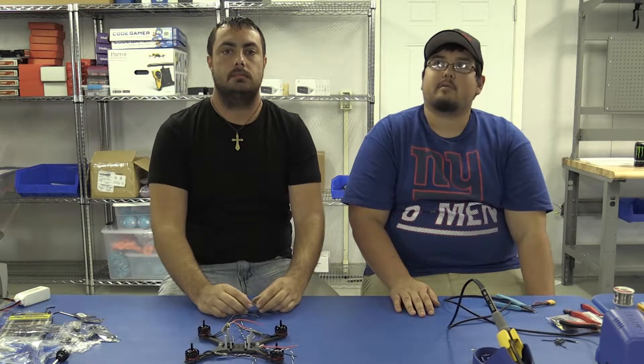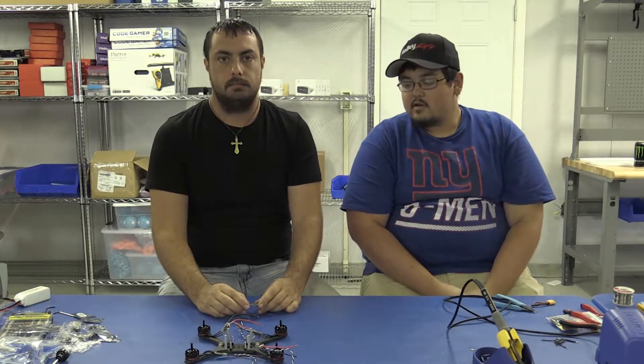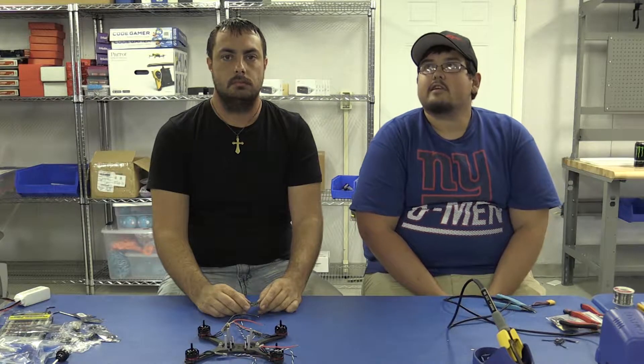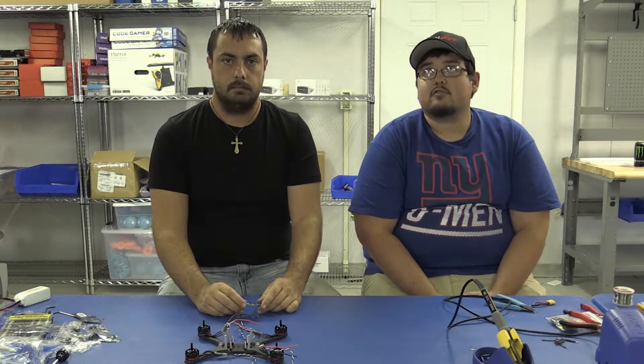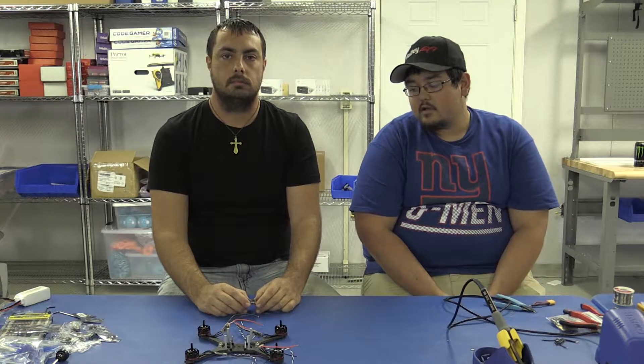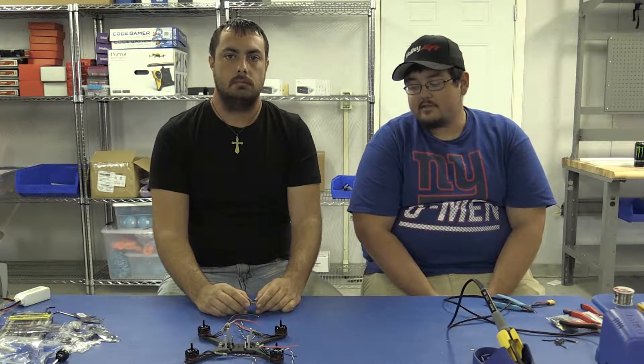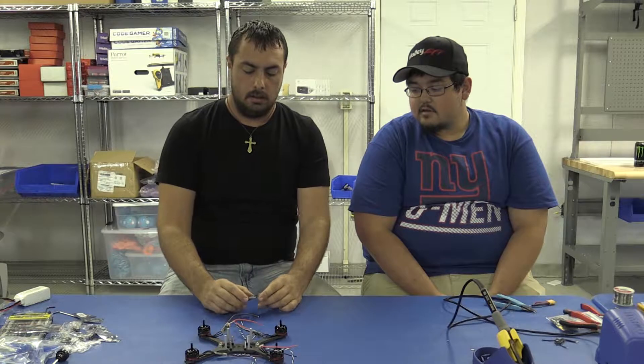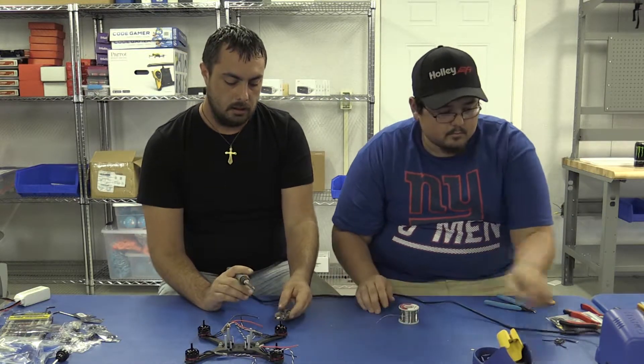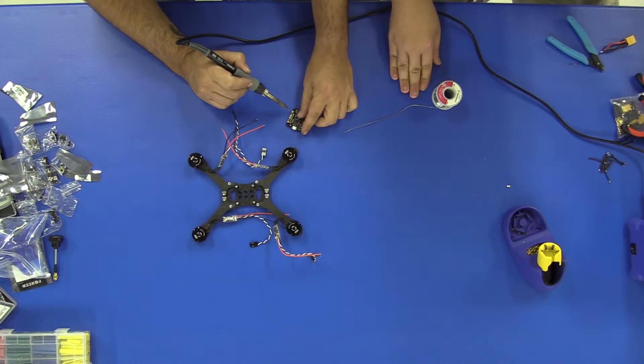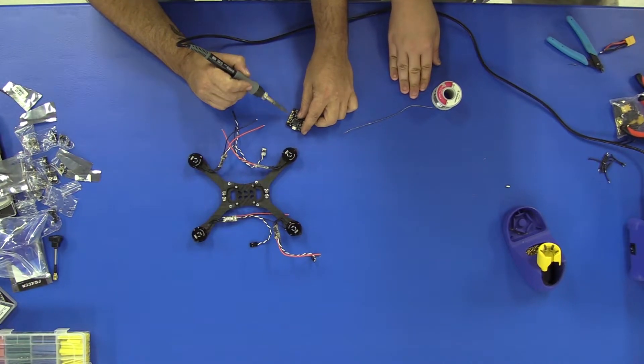Okay guys, our next step is to prepare the flight controller for connecting everything. We're going to connect the wires from the speed controllers to the board. The first step is to tin the pads.